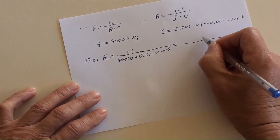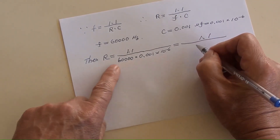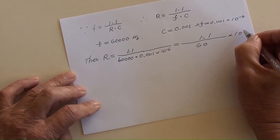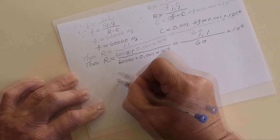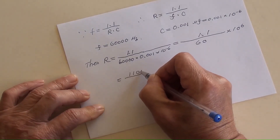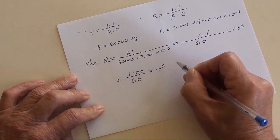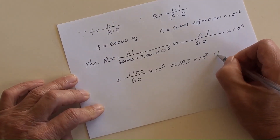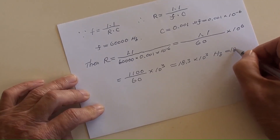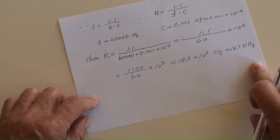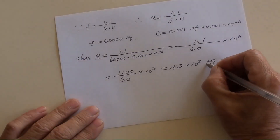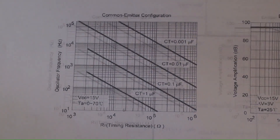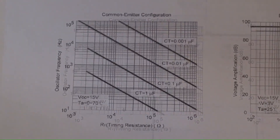Working through the calculation, R equals 1.1 divided by 60,000 times 10 to the power of negative 6, which gives approximately 18,300 Ohms. A graphic from the TL494 datasheet is shown here to verify this result.